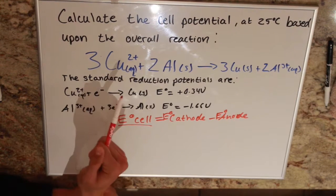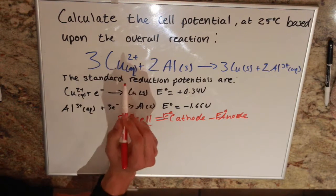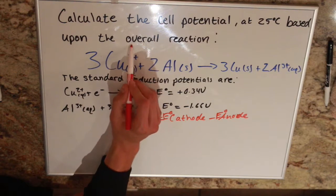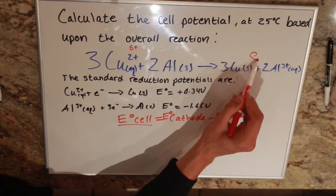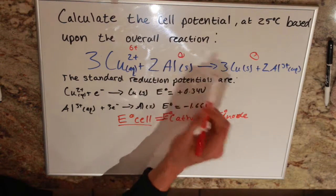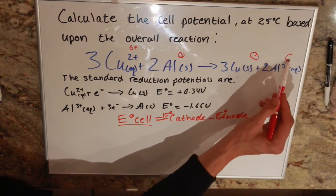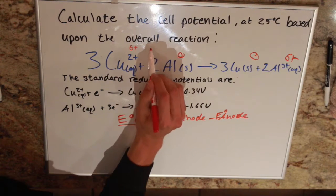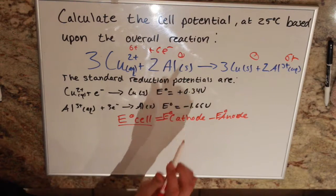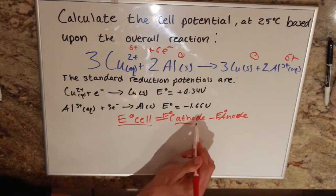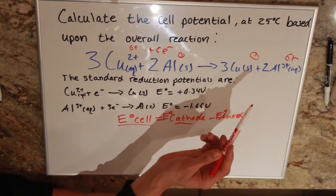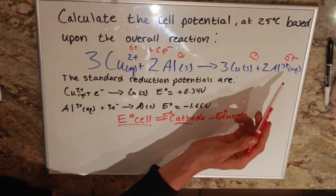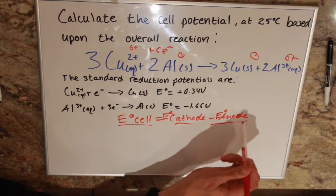We can see here that our copper goes from technically 6 plus (because there's a 3 here plus a 2) to 0 on this side, and our aluminum goes from 0 to 6 plus. So our copper is gaining 6 electrons, becoming more negative, making it our cathode, and our aluminum is losing 6 electrons, making it more positive, giving us our anode.